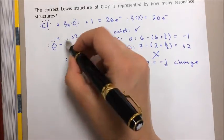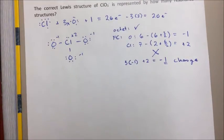Now remember, chlorine is in the third period of the periodic table. Therefore, it can expand its octet and accept more than eight electrons.